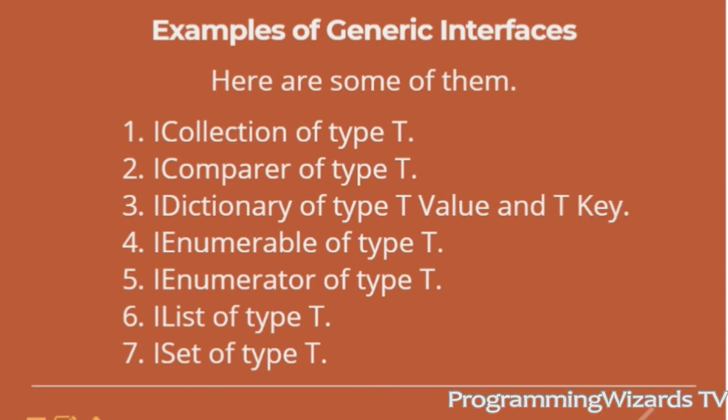IComparer of type T. This defines a way to compare two objects. IDictionary of type TValue and TKey. This allows a generic collection object to represent its contents using key-value pairs. IEnumerable of type T. This returns the IEnumerator interface for a given object. IEnumerator of type T. This enables for-each style iteration over a generic collection.